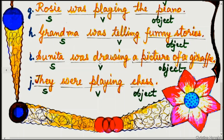Example I: Sunita was drawing a picture of a giraffe. 'Sunita' is the subject, 'was drawing' is the verb with additional -ing, and 'a picture of a giraffe' is the object.